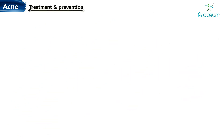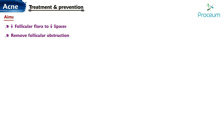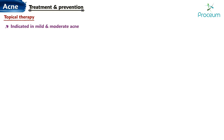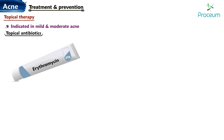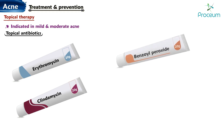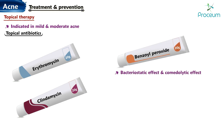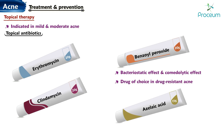Treatment and prevention of acne. Aims of treatment: to reduce follicular flora, to reduce lipases, to remove the follicular obstruction, to reduce inflammation, and to reduce sebaceous gland activity. Topical therapy for acne is indicated in mild and moderate acne. Topical antibiotics include erythromycin and clindamycin. Benzoyl peroxide has a bacteriostatic and comedolytic effect and is the drug of choice in drug-resistant acne. Azelaic acid has antimicrobial, anti-inflammatory, and comedolytic effects.